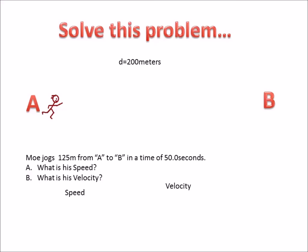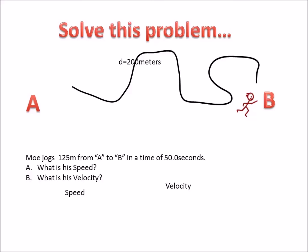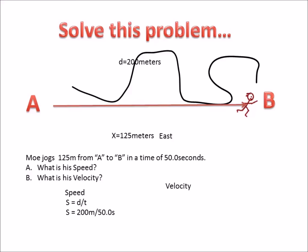Let's take a look at a simple problem. Mo jogs 125 meters from A to B in a time of 50 seconds, but travels a curved path of 200 meters. What is his speed? Speed is distance divided by time — 200 meters divided by 50 seconds — which gives us 4 meters per second.